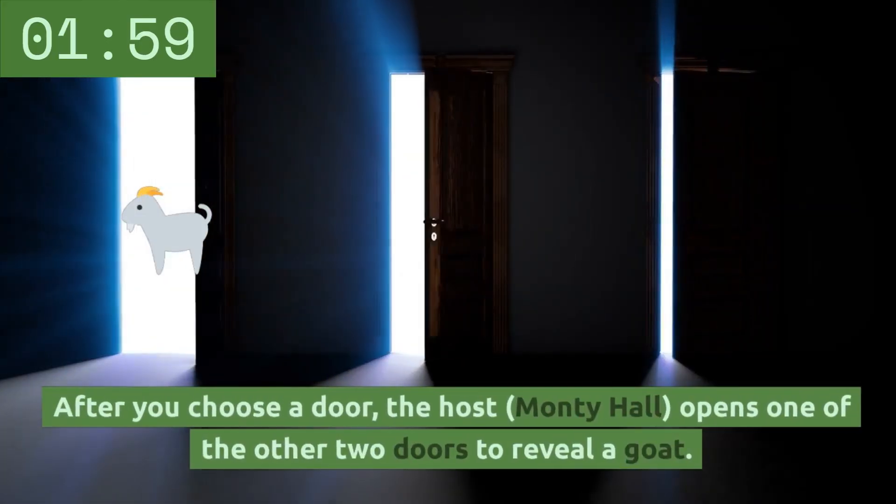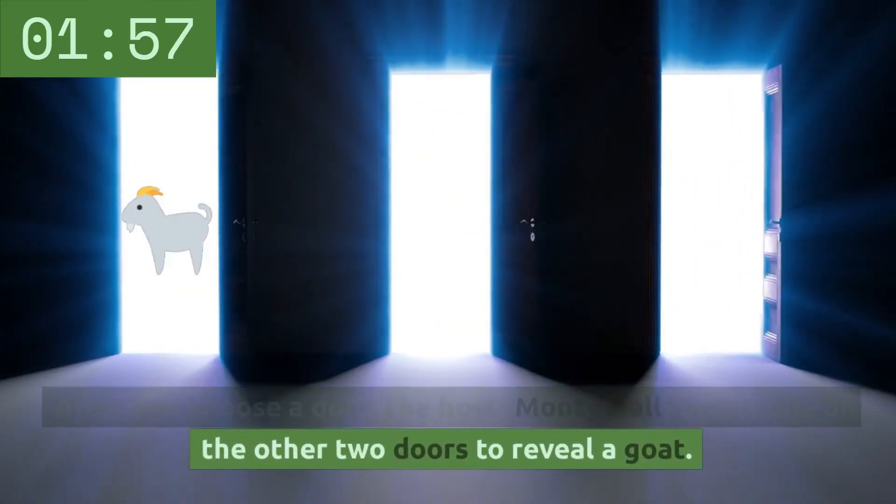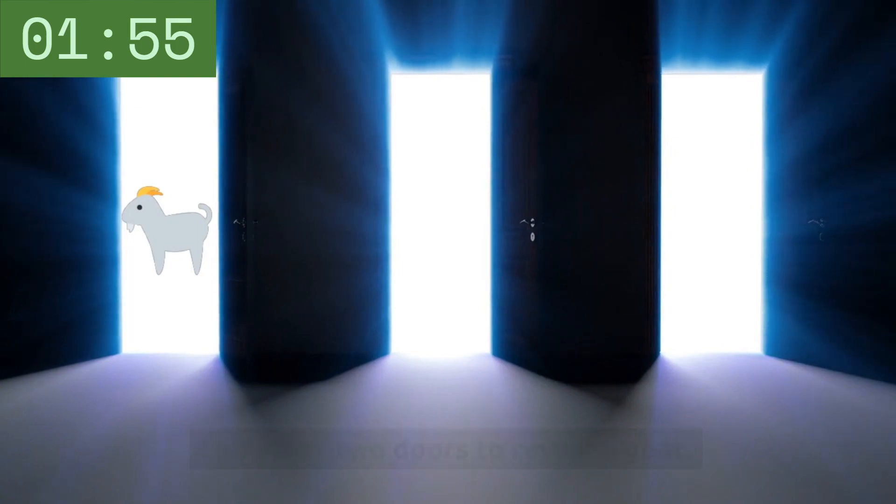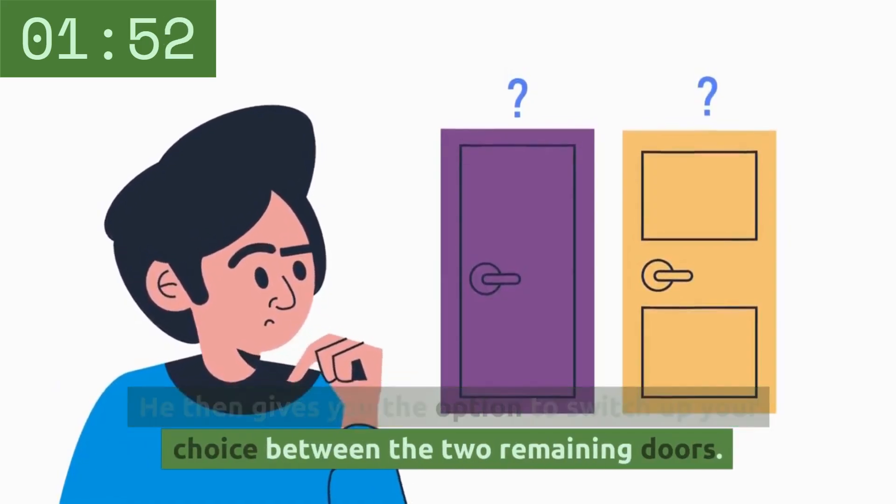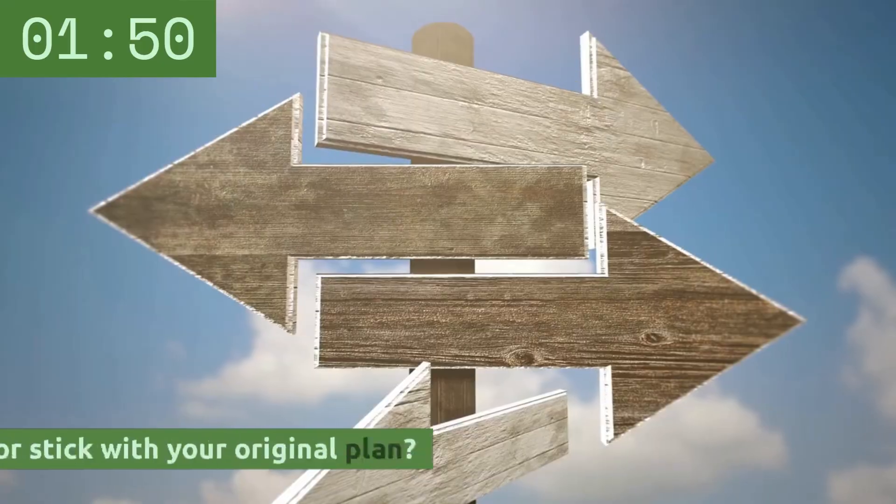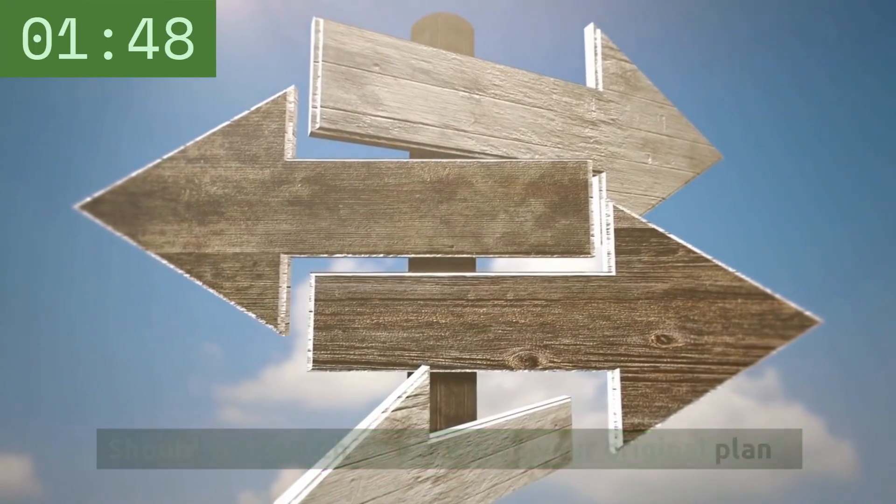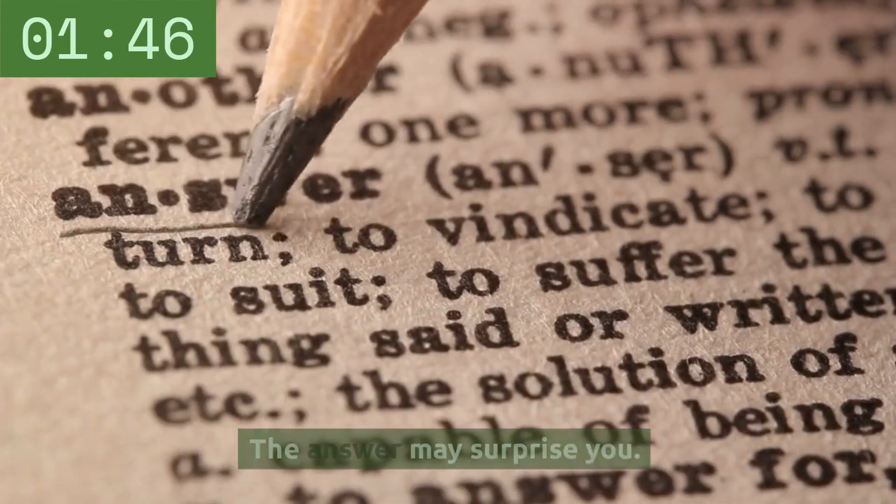After you choose a door, the host, Monty Hall, opens one of the other two doors to reveal a goat. He then gives you the option to switch your choice between the two remaining doors. Should you switch, or stick with your original plan? The answer may surprise you.